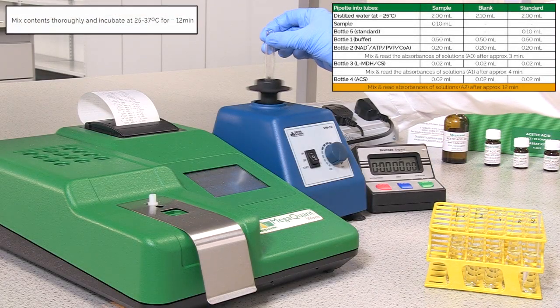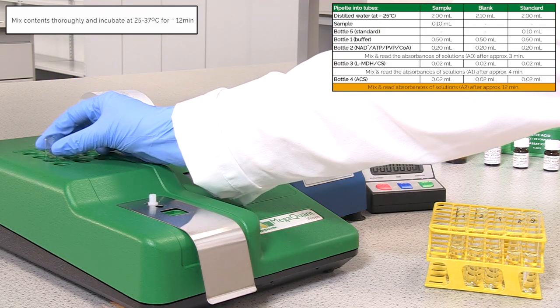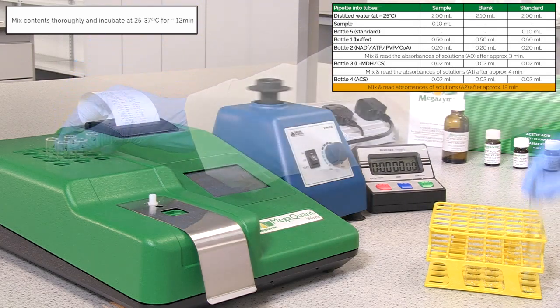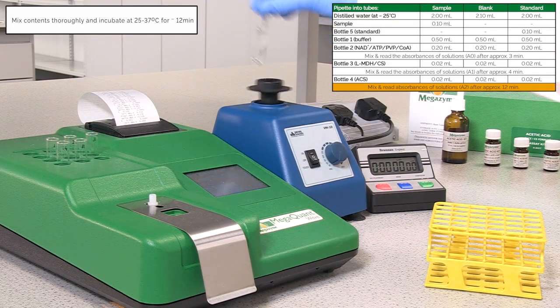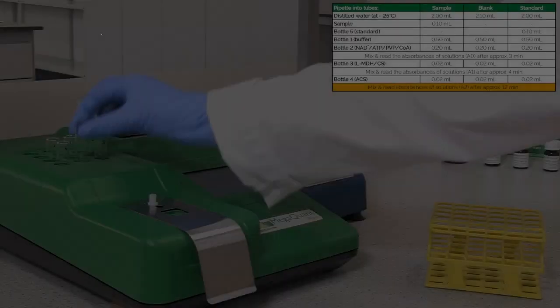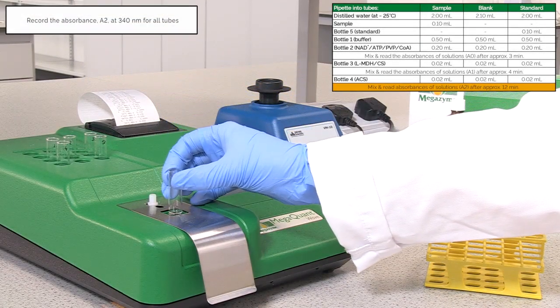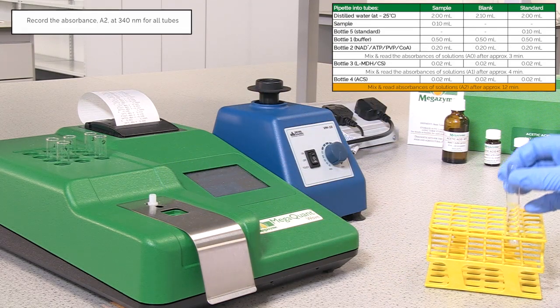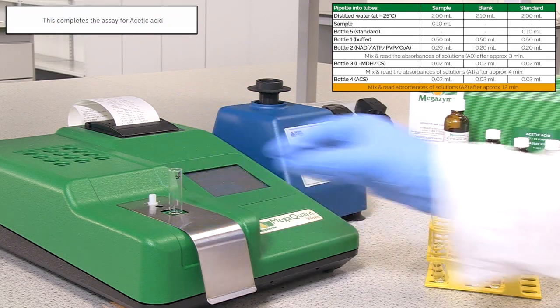Mix the tubes thoroughly and incubate them at between 25 to 37°C for 12 minutes to allow the reaction to go to completion. Record the absorbance reading, A2, for all of the assay tubes. This absorbance reading completes the measurement of acetic acid.